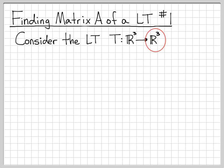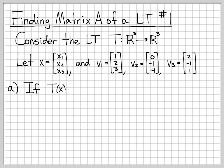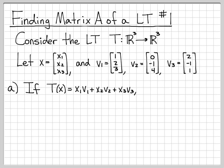We're also given a vector x whose elements are x1, x2, and x3, and we're dealing with vectors v1, v2, and v3. In part (a), we're told that the linear transformation T(x) can be written as follows: for any arbitrary vector x with elements x1, x2, x3, the output is a summation of v1, v2, and v3, each weighted by the corresponding entry in x.